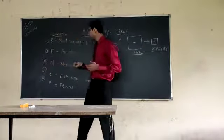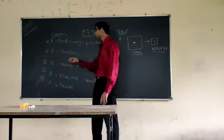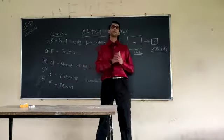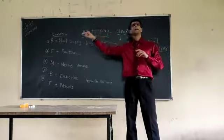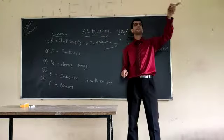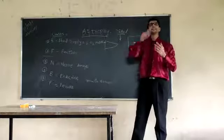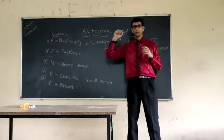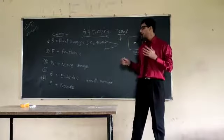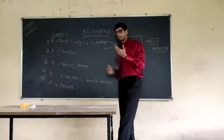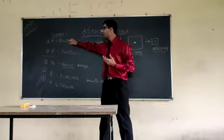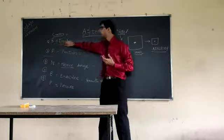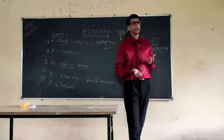Then comes our third point. That is due to nerve damage. It is said if the ceiling fan is there, if you put on the button and if it is not working, so there can be a reason that this wire is not proper. Right. So similarly to function properly, nerve supply is also very important along with the blood supply.